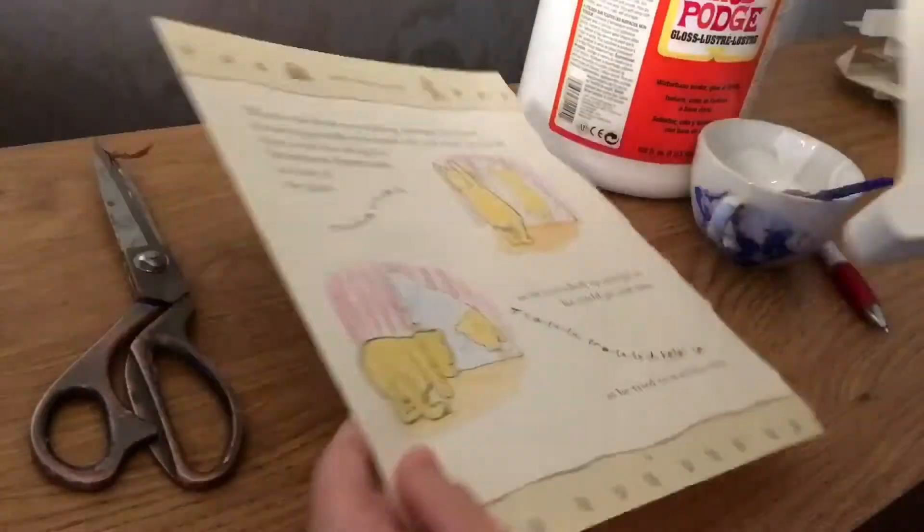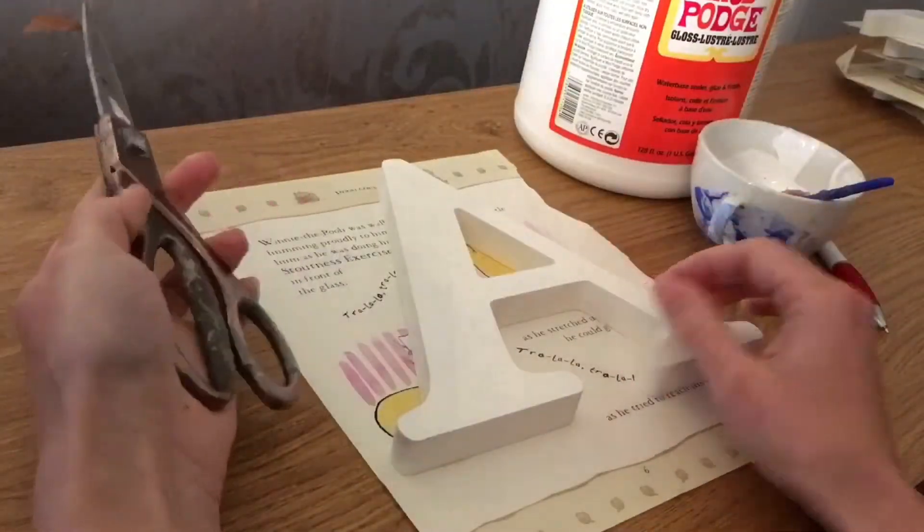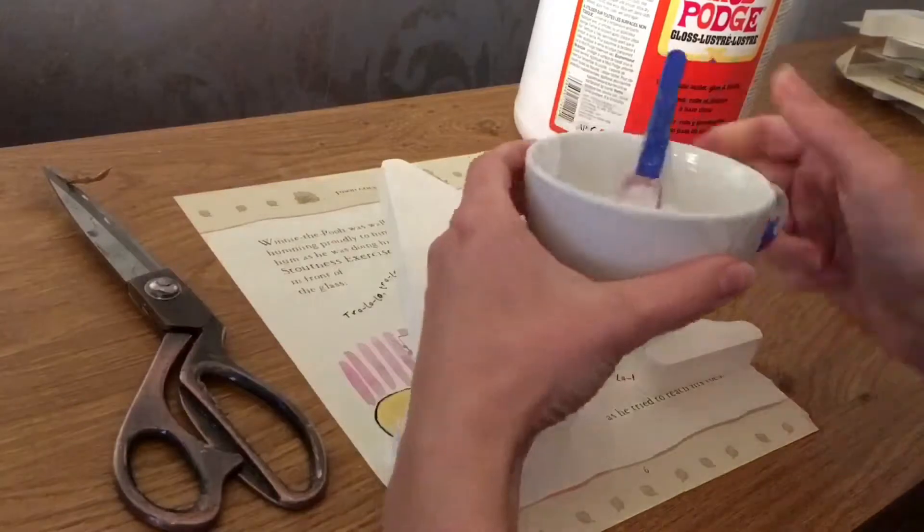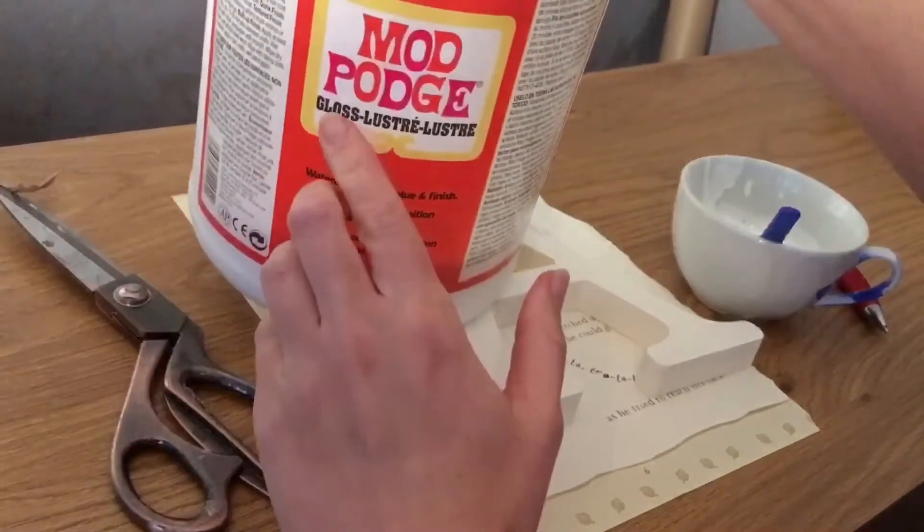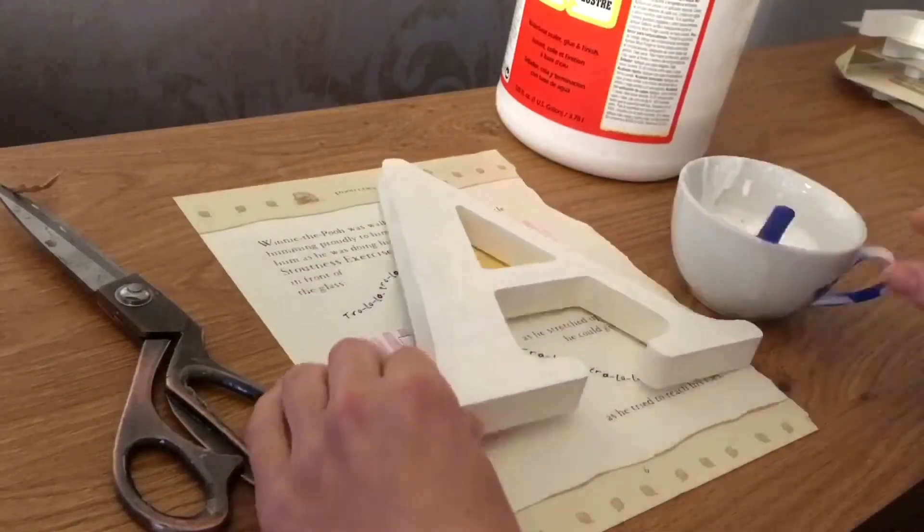These have already been sprayed. You'll also need paper from a book, scissors, a container to hold Mod Podge and a brush, Mod Podge in the gloss range, and a pen.